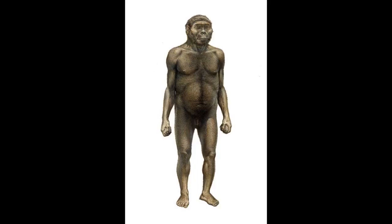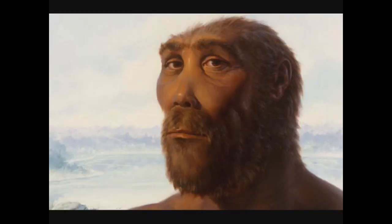The big toe gradually was lost and they started using their grasping hands for various purposes. This type of pre-human is called Zinjanthropus.